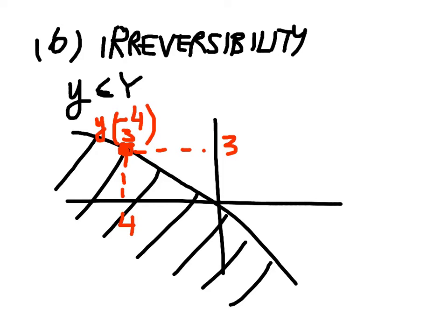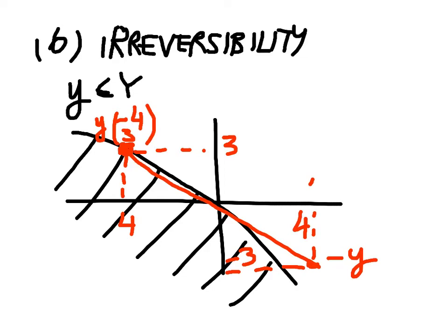It's not possible, once I've engaged in this production process, to then use the output — the three units of output — as input to produce the four units of input, to go back to where I started. So the production vector negative y is not feasible. If y is in the production set, negative y is not.